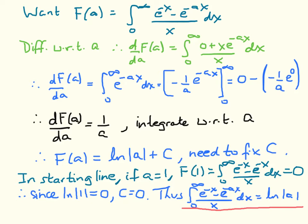If we differentiate the left side with respect to a, we get the derivative of the integral as a function of a. On the right side, using the Leibniz integral rule, we take the derivative through the integral. We get 0, because one term does not depend upon a, minus the derivative of e^(−ax) with respect to a, which pulls a factor of minus x in front. Minus minus becomes plus, giving a factor of x times e^(−ax). The factor of 1/x multiplying everything is pulled through the derivative, so it effectively sits there.